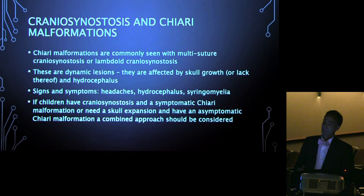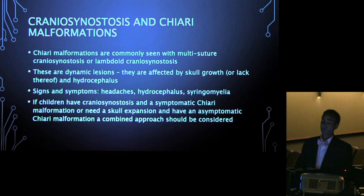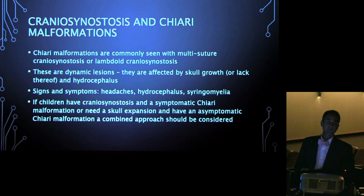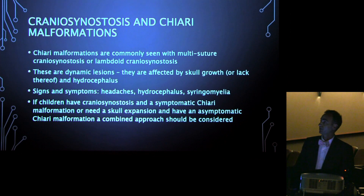These are dynamic lesions. When we see kids born with multi-suture craniosynostosis, initially an MRI might not show a Chiari, but as their brain grows and their skull doesn't, they can develop Chiari malformations. It's affected by skull growth and also by hydrocephalus, which is frequently associated with complex craniosynostosis and can also impact the development of a Chiari.